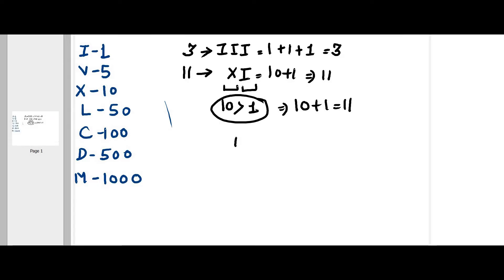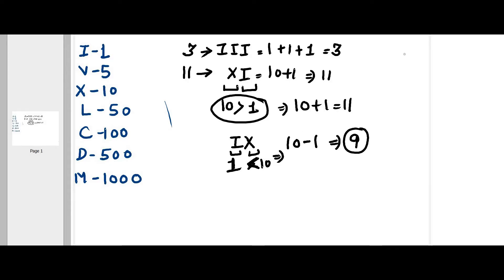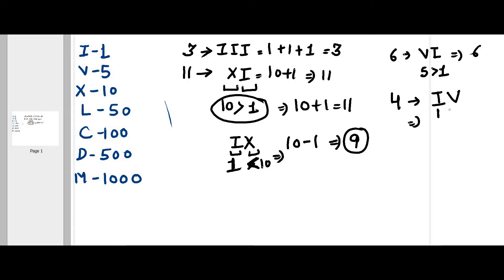If I write IX, then I is 1 and X is 10. Since 1 is less than 10, instead of adding we subtract: 10 minus 1 equals 9. Similarly, for 6 it's V plus I — 5 plus 1 — because 5 is greater than 1. For 4, it would be 5 minus 1, so IV: when the first value is less than the next, it's treated as negative — minus 1 plus 5 equals 4.